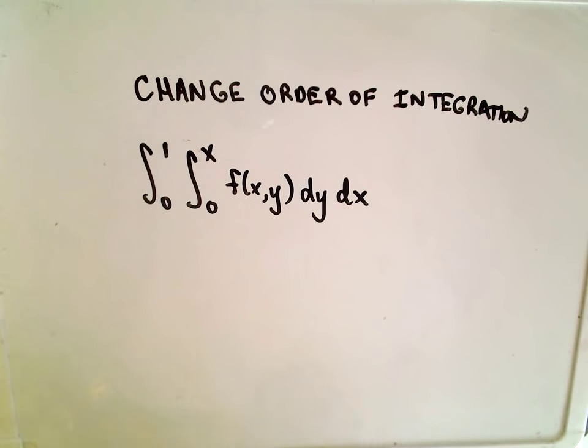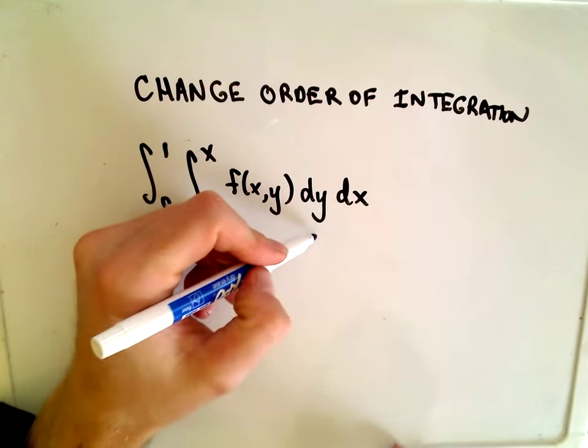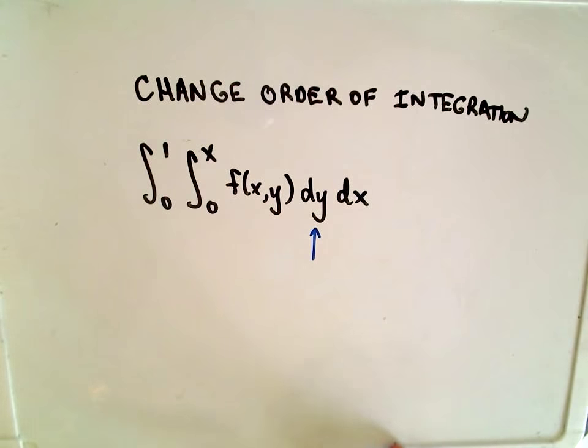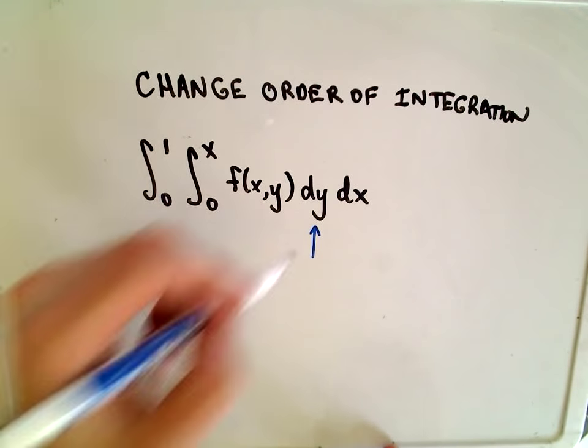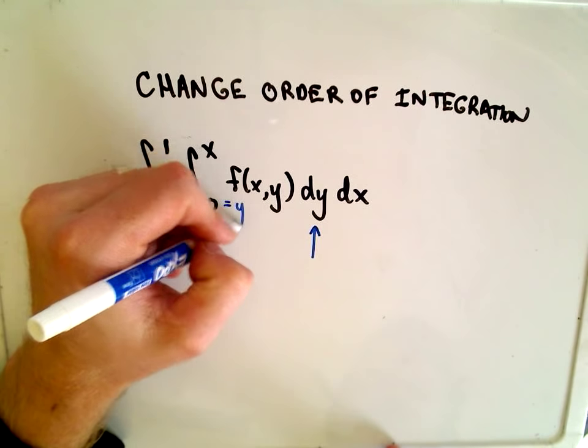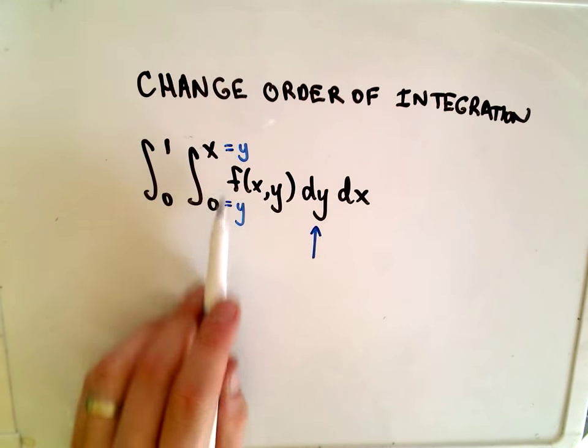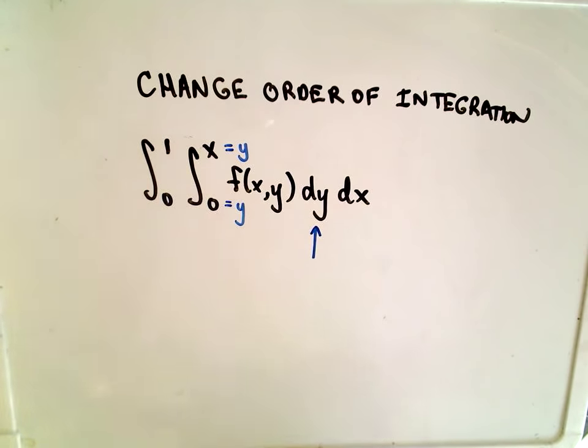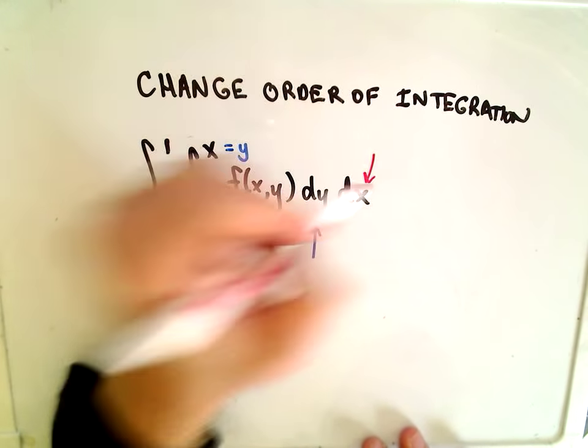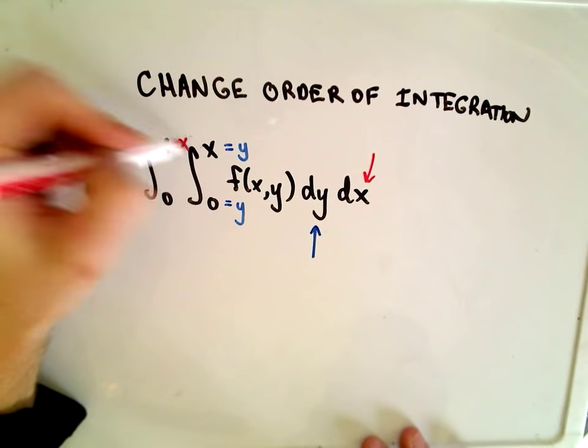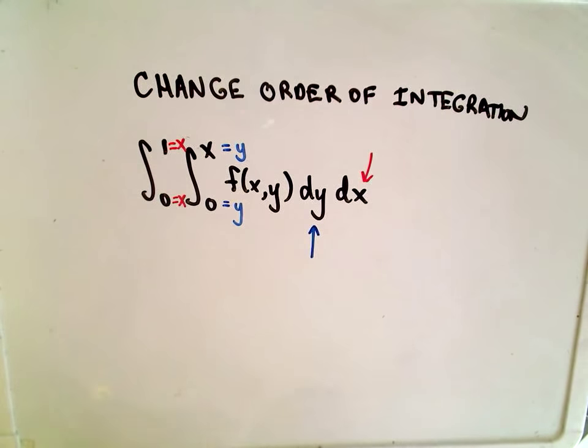The way I like to do this, or at least I think about it and it works for me, notice the inside part again is dy. So whatever that variable is, I'm going to write the inside limits equal to that. So I'm going to write y equals 0, y equals x. For the outside limit, I'm going to do the same thing. Since it's dx, I'm going to think about this as being x equals 1 and x equals 0.